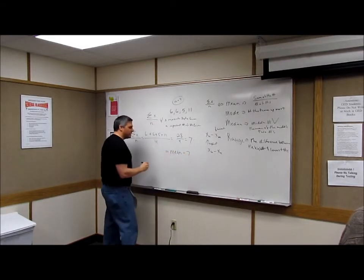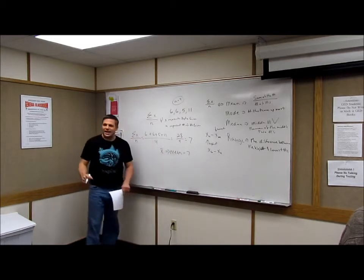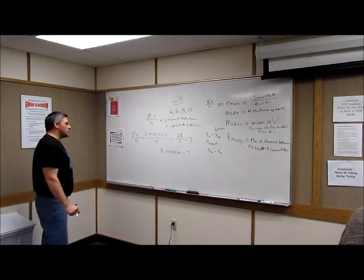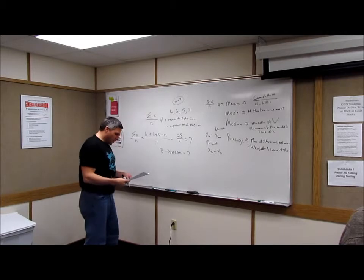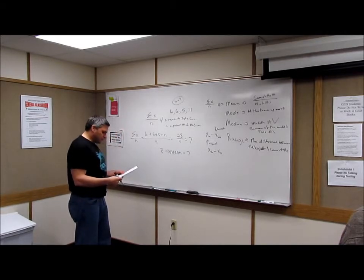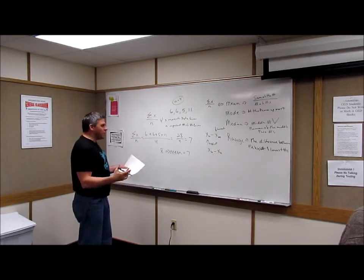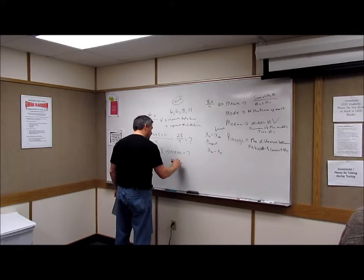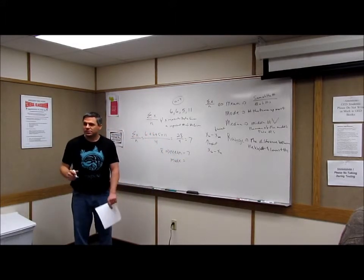Now what we also do here, we call X bar the mean. So X bar is seven. Then we want to know what the mode is. What number comes up the most? Six.